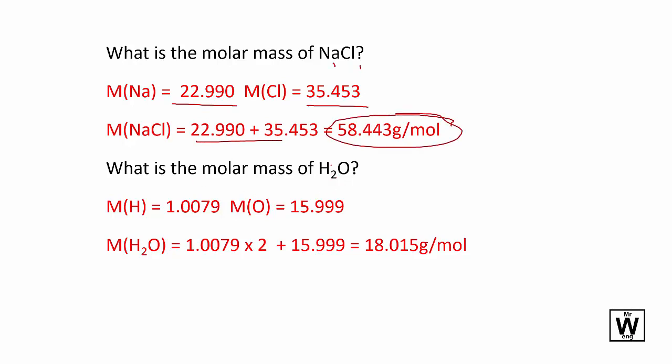So if there's a little 2 down there then the hydrogen is times by 2, there's just one oxygen, add them together and you'll get 18 grams per mole. So it's important before we start doing stoichiometry that you know how to work out the molar mass of various compounds.